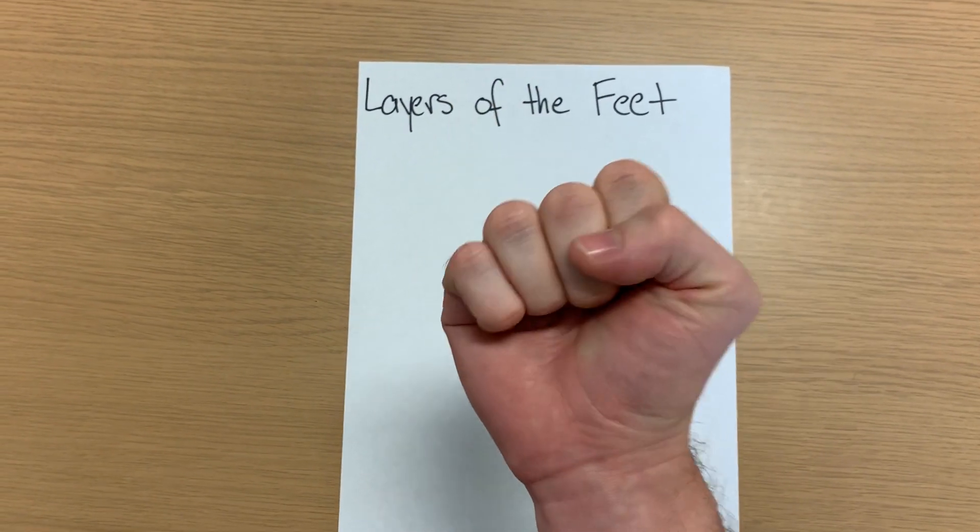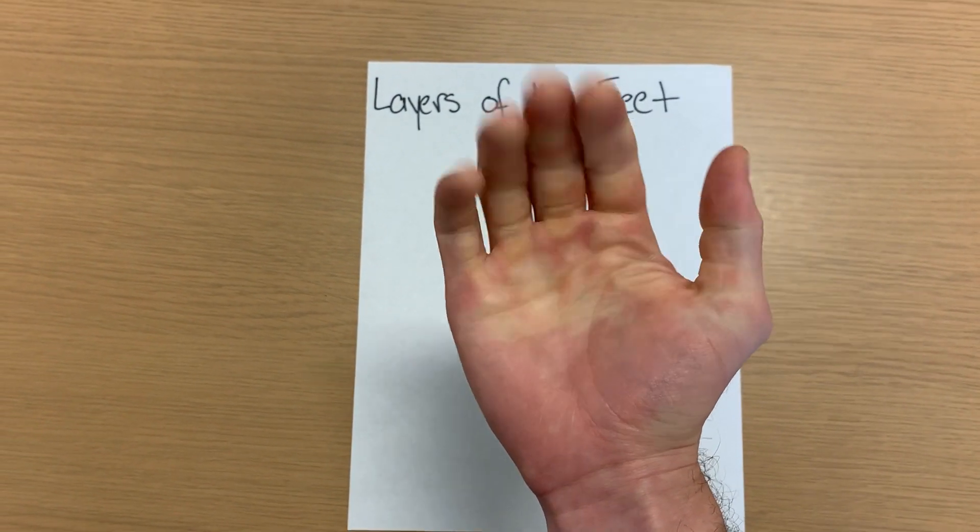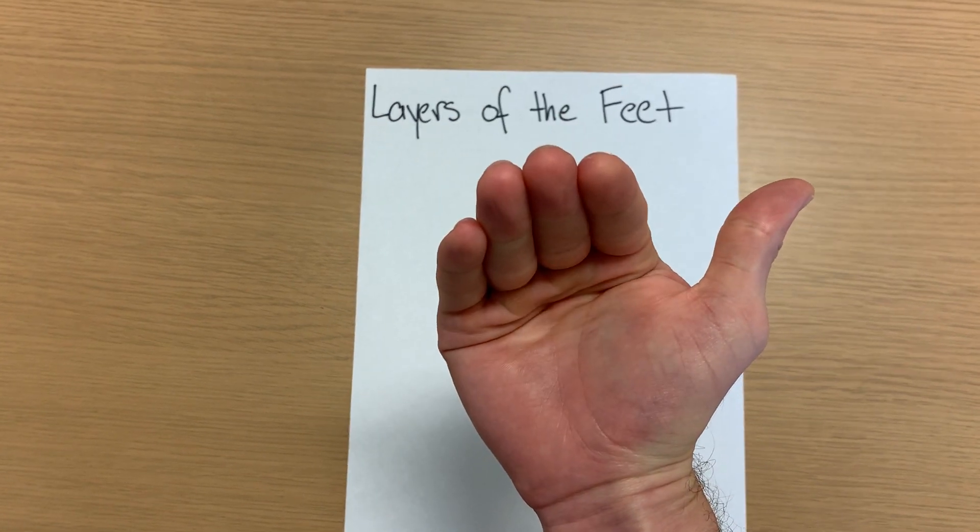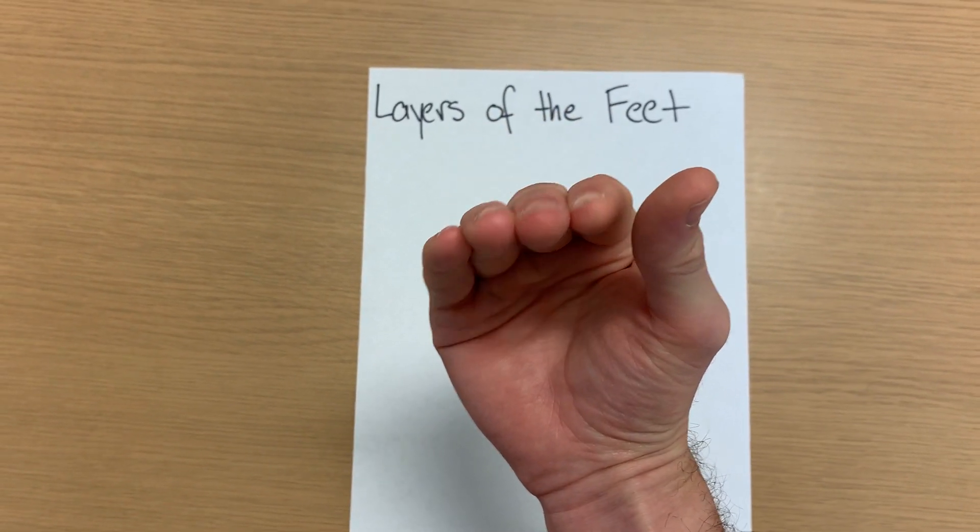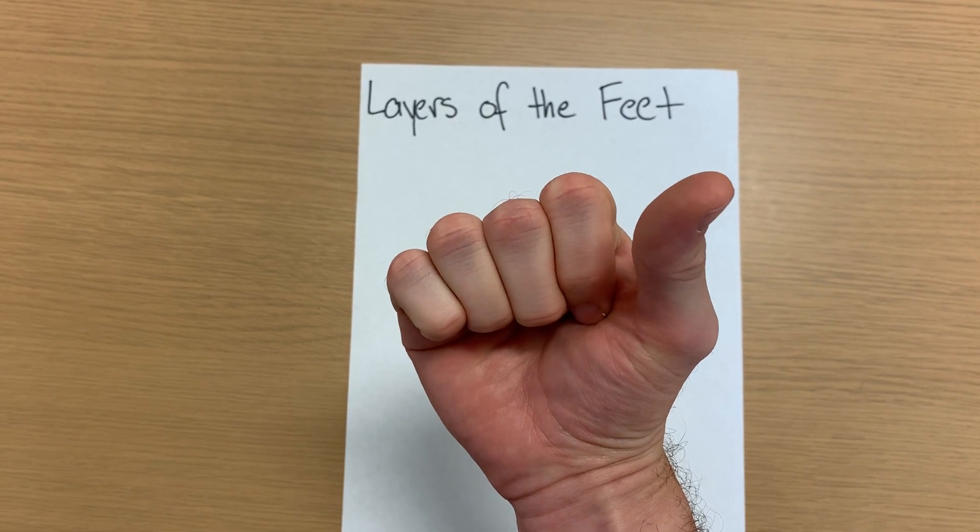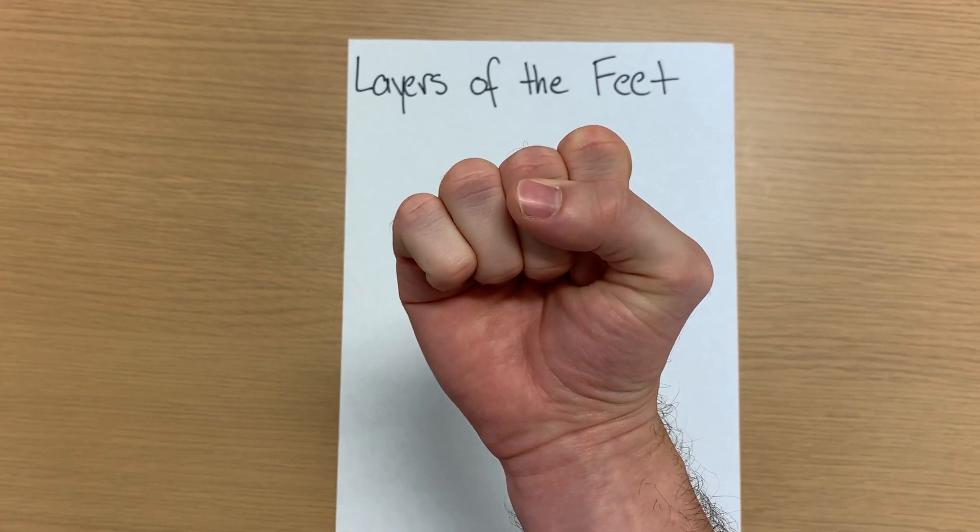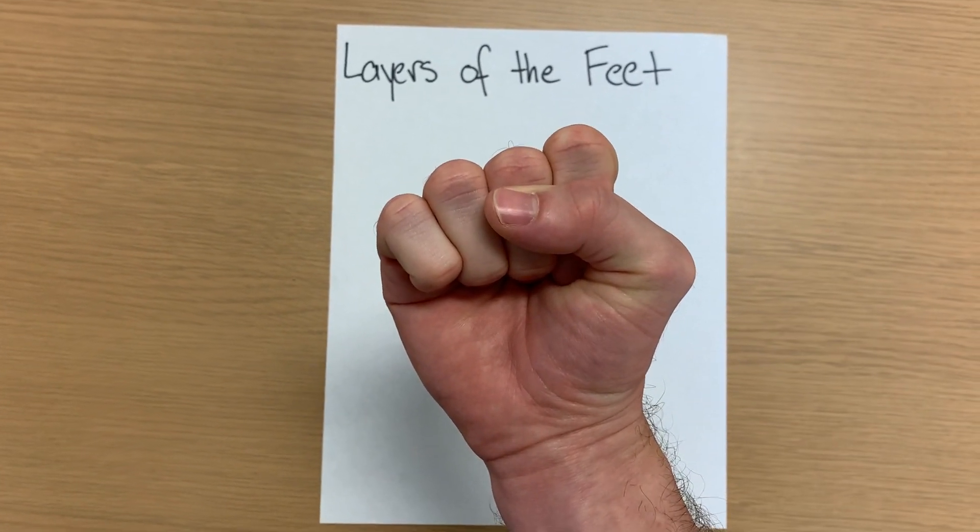Second layer, make a fist. So we have our lumbricals, quadratus plantae, tendon of the flexor digitorum longus, tendon of the flexor hallucis longus.